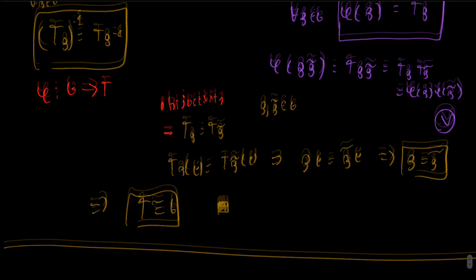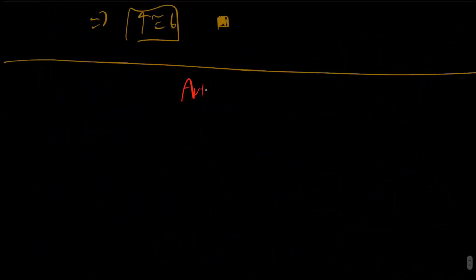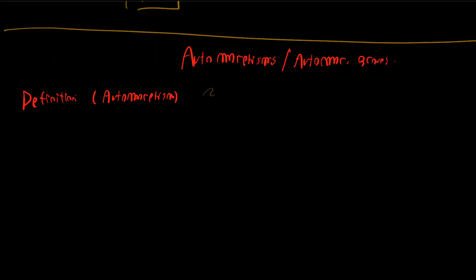Now we're going to pass to another very important topic: automorphisms and automorphism groups. There are many notions of these morphisms that apply not only to groups but to more general mathematical structures — you'll see this when you study category theory. So far we've seen homomorphisms, isomorphisms, and now automorphisms, but there are more, such as epimorphisms and monomorphisms.